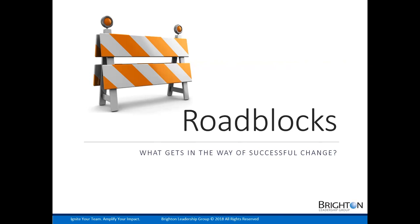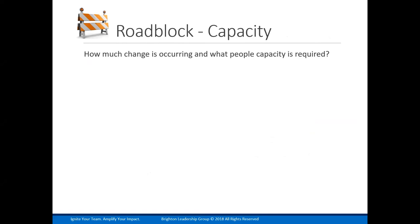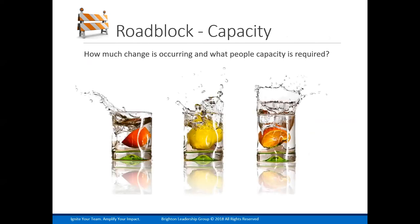Some other roadblocks might include resistance or a change in sponsor. For our time today, we're going to focus on these four roadblocks. These are essential to understand and be able to brief a sponsor or a leader about so he or she can better understand what may prevent successful change. So let's tackle that first roadblock: capacity. Believe it or not, change capacity is a limited resource. One of the fabulous contributions Daryl Connor made to the discipline of change is the concept of human due diligence.